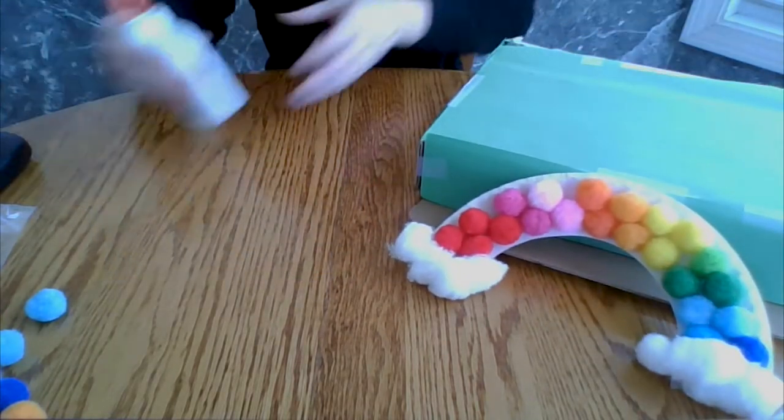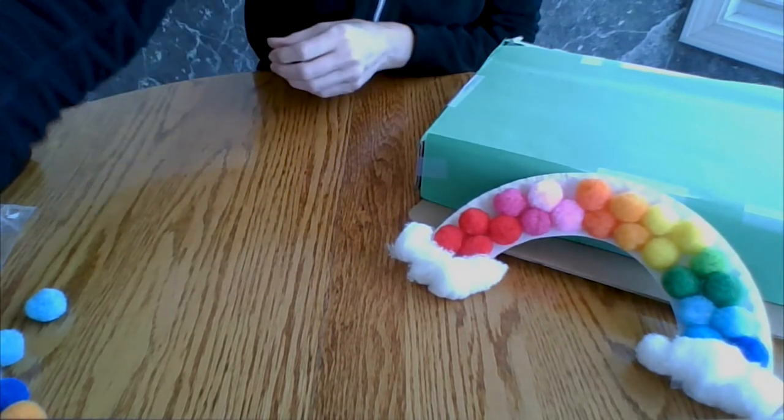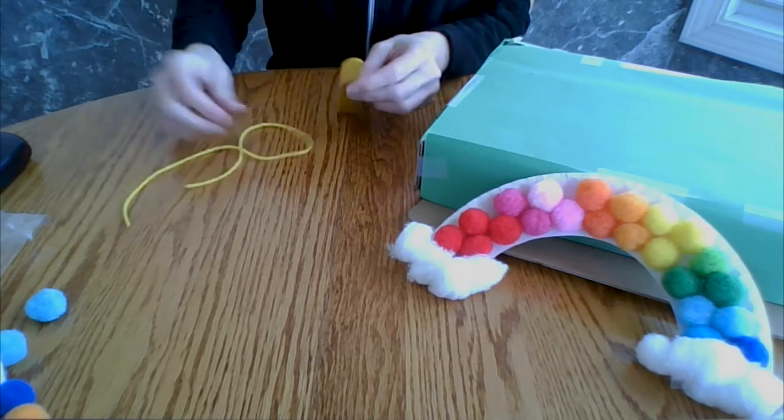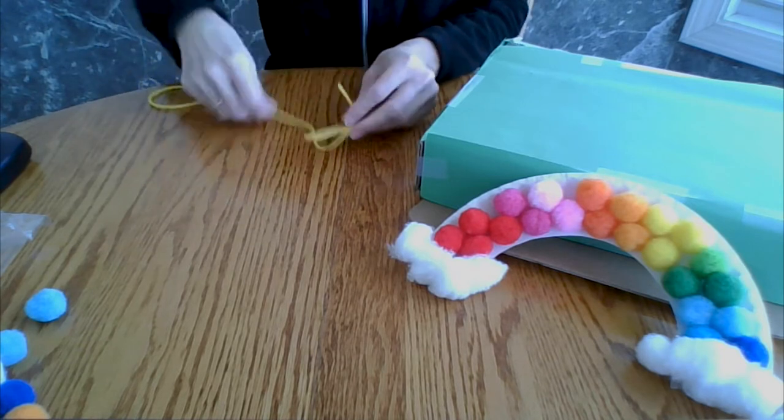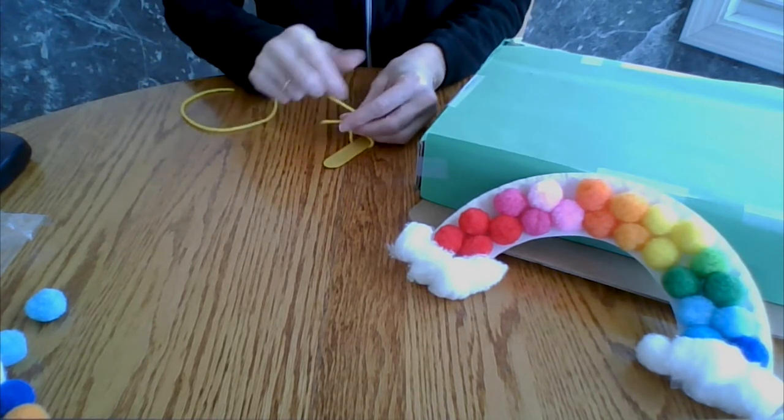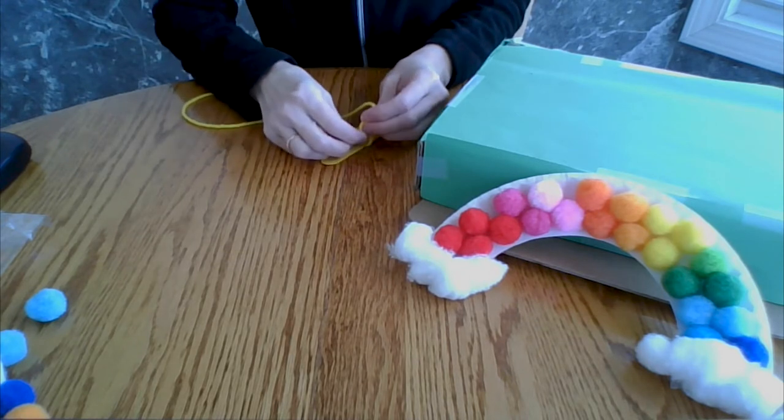So the next thing we're going to do is make something to prop the box open. Got a popsicle stick and a string. Tie the string, or get some help if you need it. Tie the string on here two times.